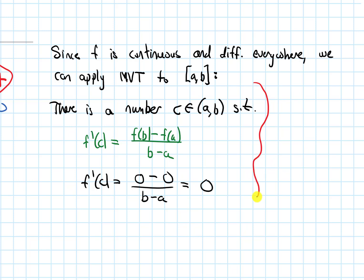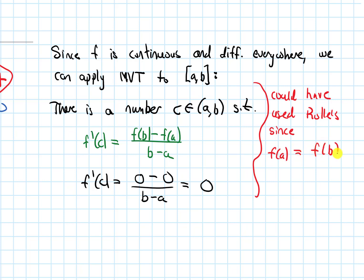You might have noticed that for this argument we could have actually used Rolle's Theorem instead of MVT. Rolle's Theorem has a third condition besides continuous and differentiable — that f(a) = f(b) — and it would let us directly jump to f'(c) = 0. But in general, anytime you want to use Rolle's Theorem, it's perfectly fine to use the Mean Value Theorem, since Rolle's Theorem is a special case of it.